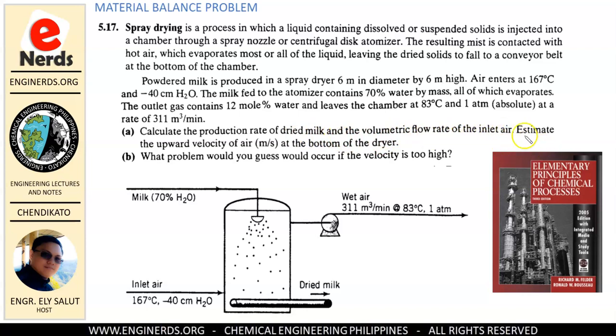We need to calculate the production rate of dried milk and the volumetric flow rate of the inlet air. We also need to estimate the upward velocity of air in meters per second at the bottom of the dryer.